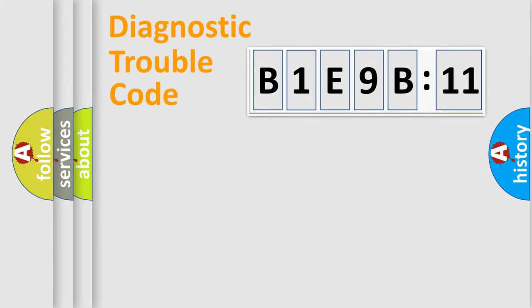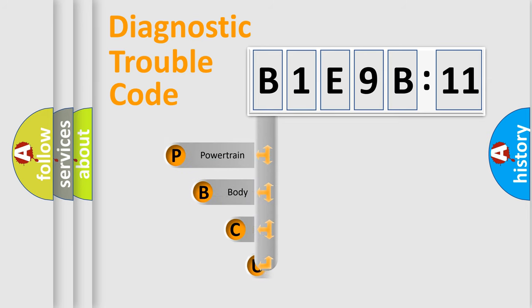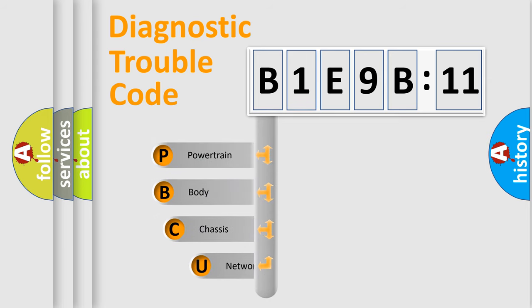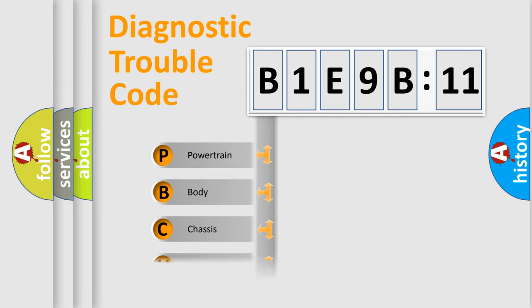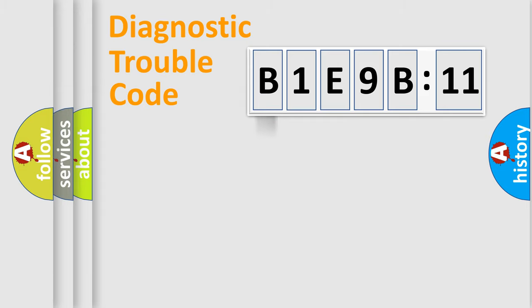Let's do this. First, let's look at the history of diagnostic fault code composition according to the OBD2 protocol, which is unified for all automakers since 2000. We divide the electric system of an automobile into four basic units: Powertrain, Body, Chassis, and Network.